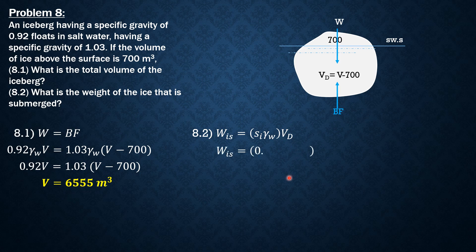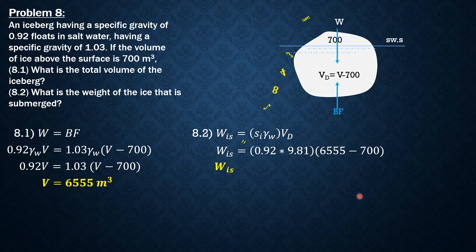So: 0.92 × 9.81 × (6,555 − 700). The weight of the ice that is submerged is 52,843 kilonewtons. So that's it for this problem.